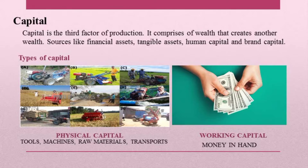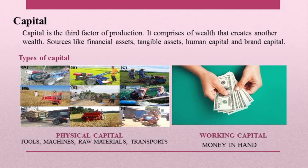Under the types of capital we have physical capital and working capital. Physical capital means the tools, machines, raw materials, and transportation used for production purposes. Working capital is the money in hand — money readily available to invest for further investment purposes.